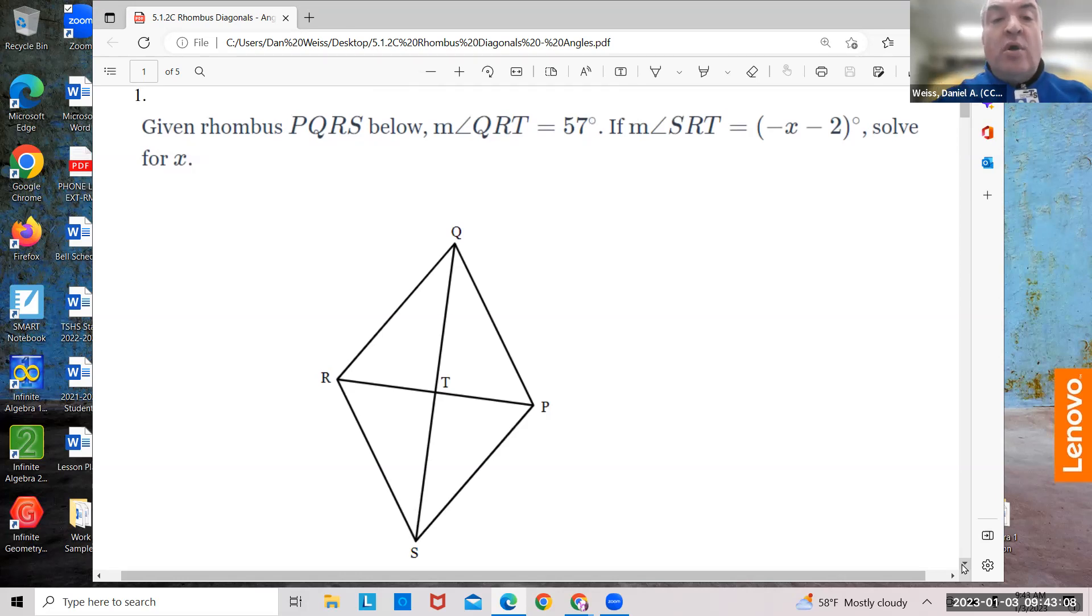So, we're going to look at this rhombus here. Remember what a rhombus is? In a rhombus, all four sides are equal, meaning this side is equal to this side, equal to this side, equal to this side. All four sides are equal.